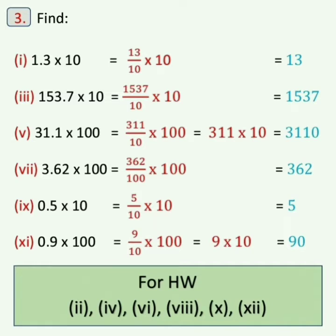Now sum number 3: 153.7 into 10. Write 153.7 as 1537 upon 10, into 10. Cancel 10 from numerator and denominator. The answer is 1537.